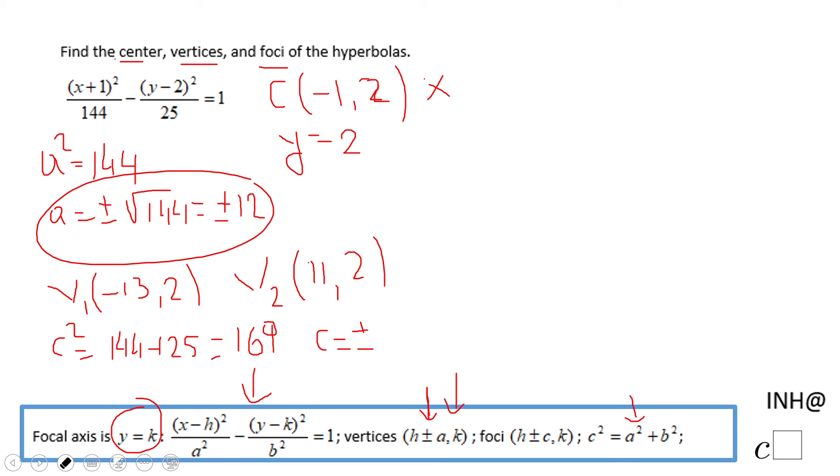So similar with the vertices, we can find the foci by moving 13 units left and right. So the first foci, if I move 13 units left from negative one, that will be negative 14 and two. And the second foci, if I move 13 units right from negative one, that will be 12 and two.